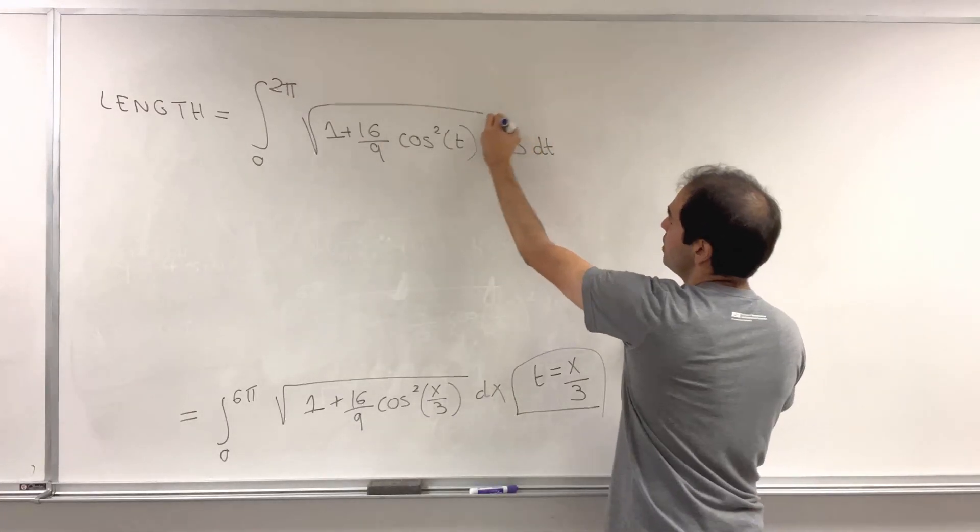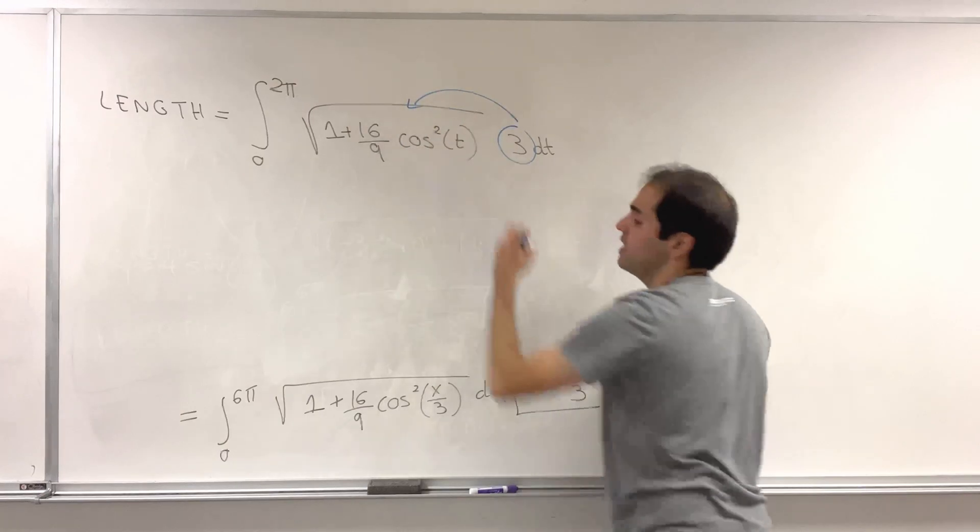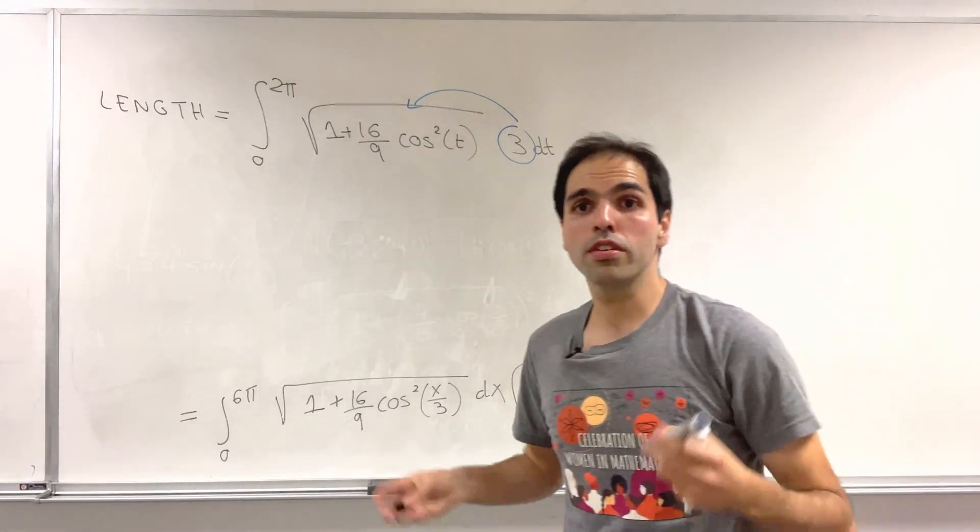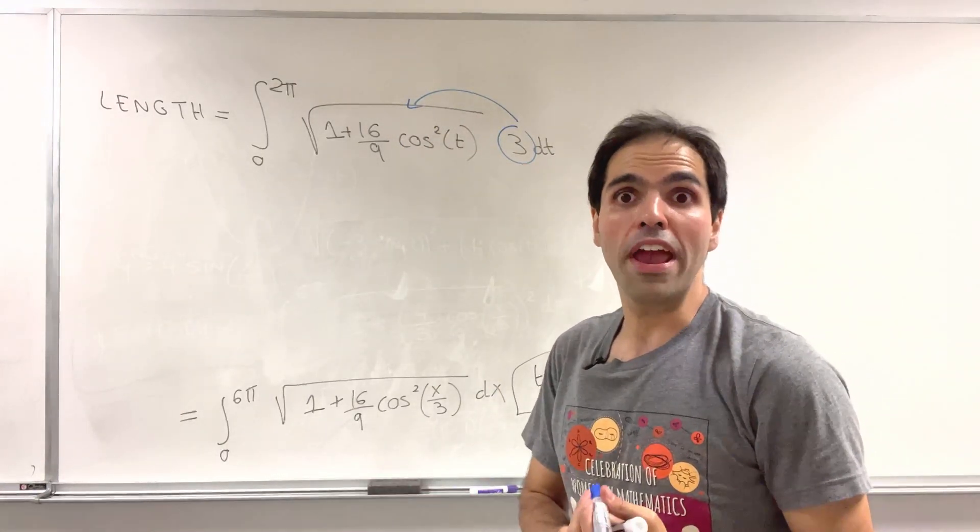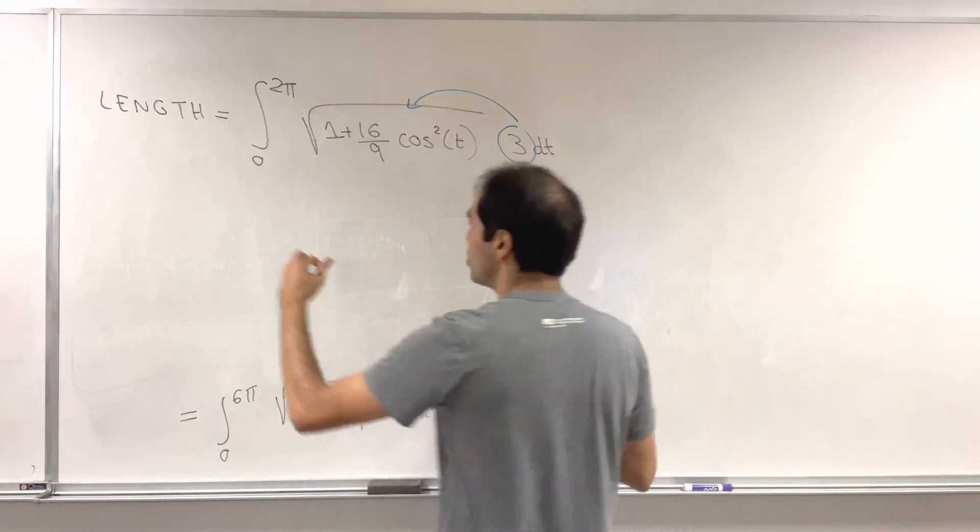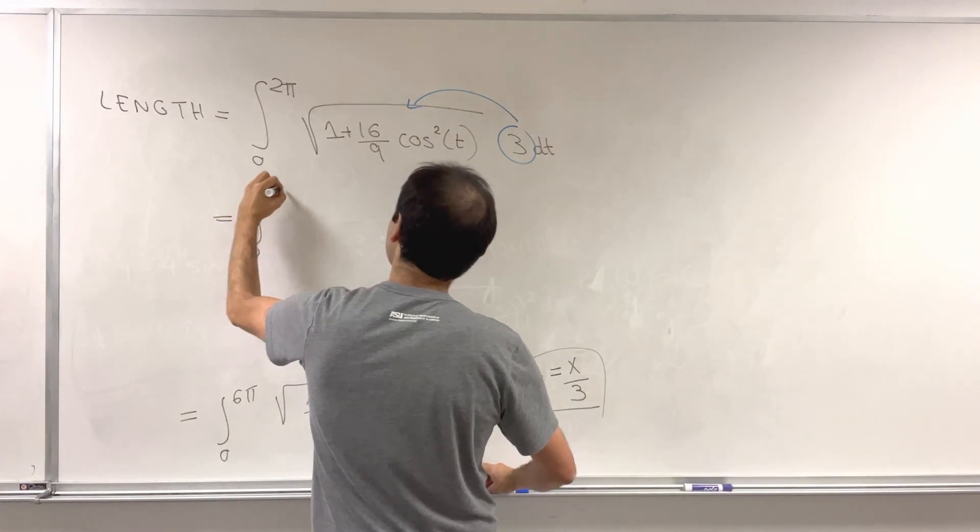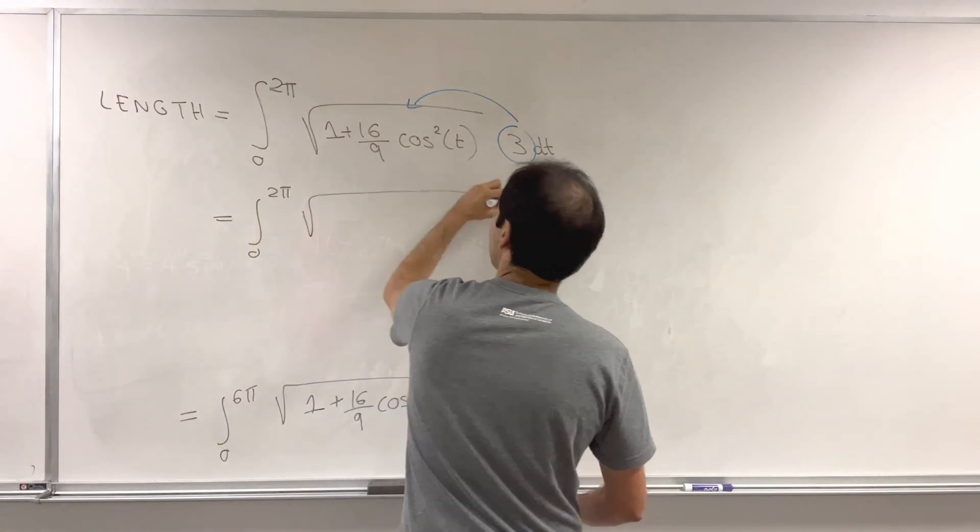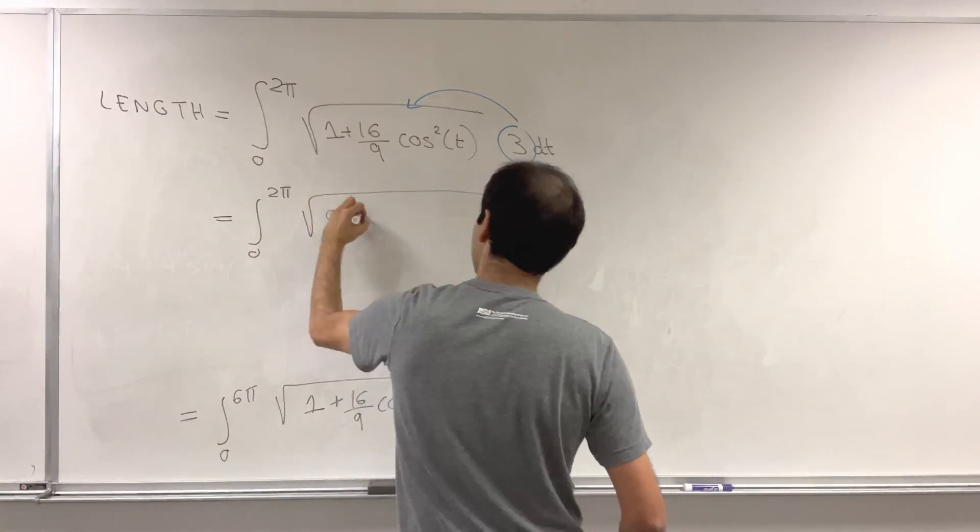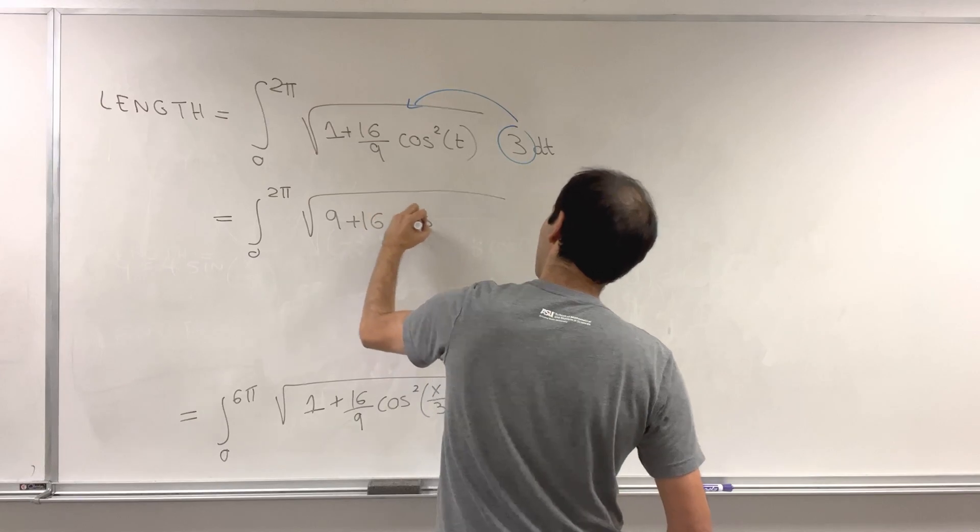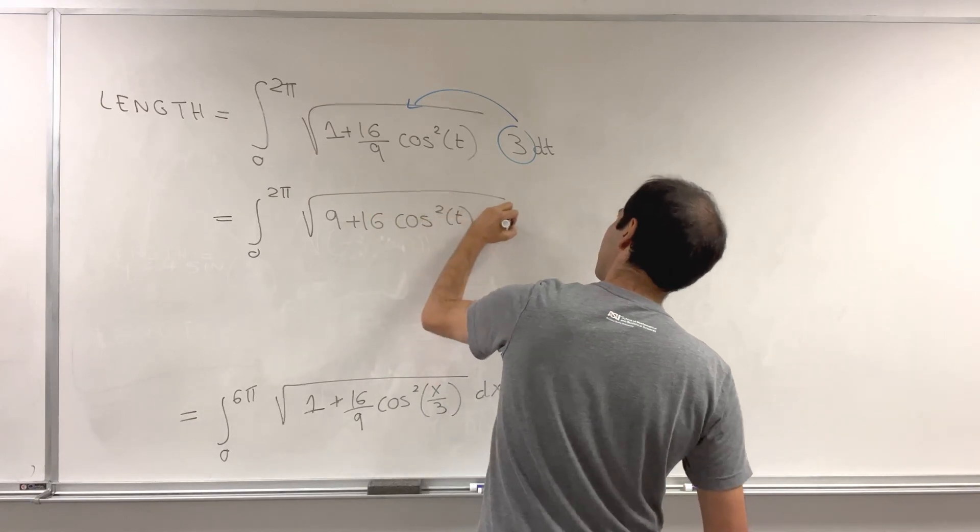And well, this 3 then comes inside of the square root, but 3 becomes 3 squared, which is 9. And so in the end, we get integral from 0 to 2 pi square root of 9 plus 16 cosine squared of t dt.